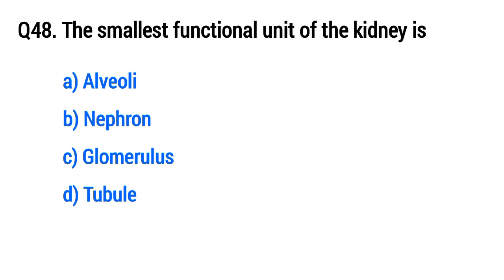Question 48: The smallest functional unit of the kidney is... The right option is B, nephron.